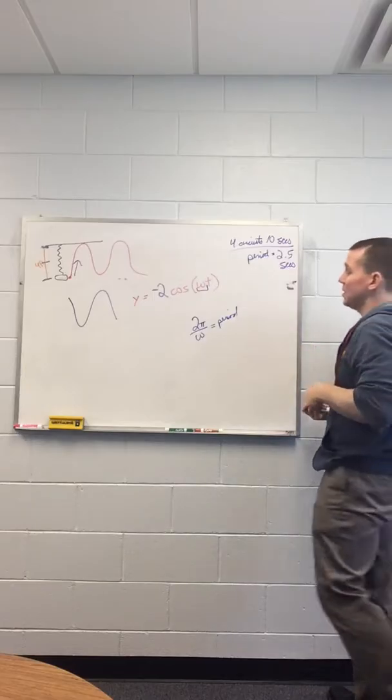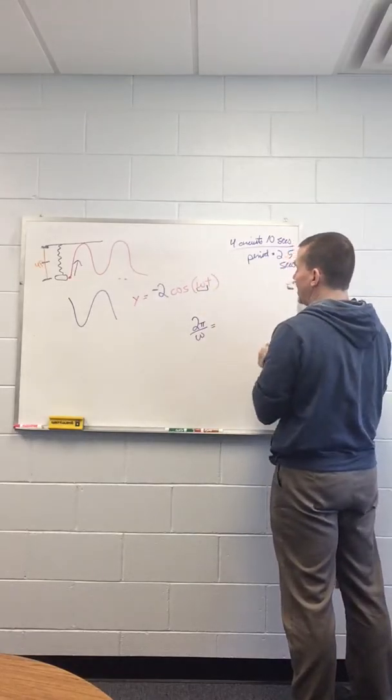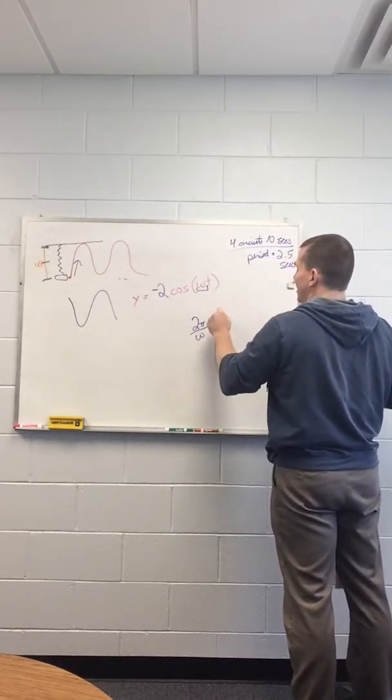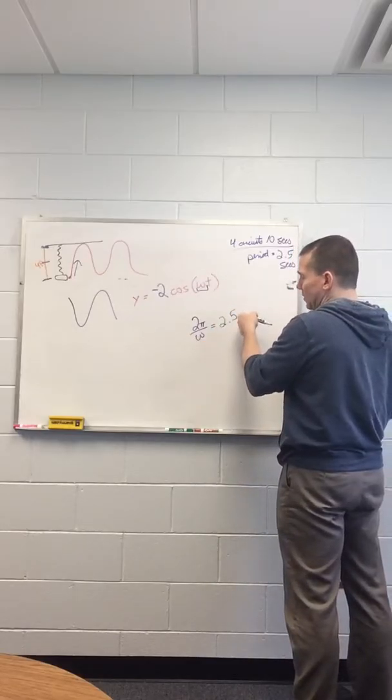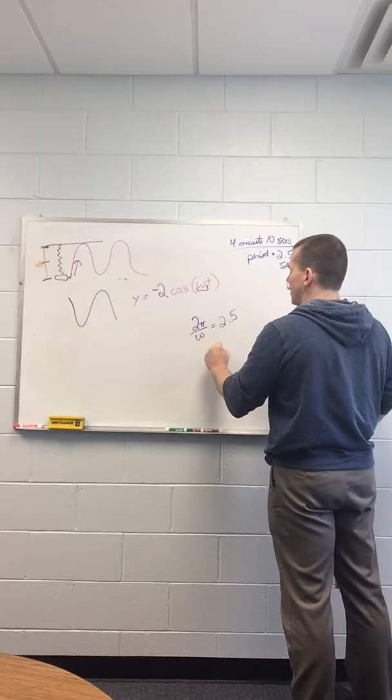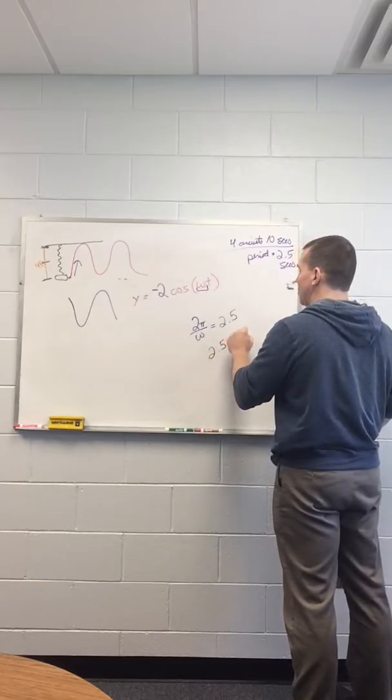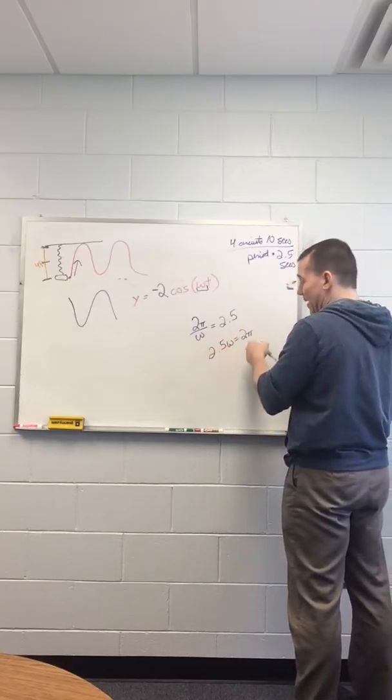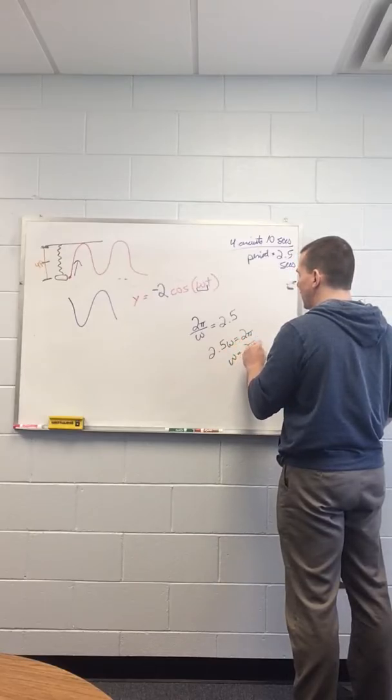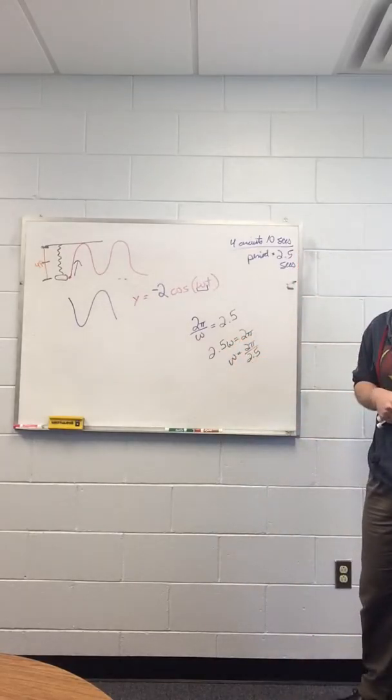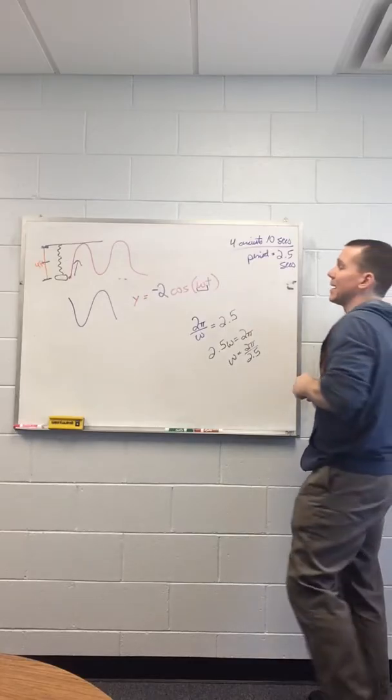Now just plug that into this equation and solve. So I get 2 pi over omega equals 2.5. Solve for omega, so multiply the omega over. 2.5 omega equals 2 pi. Divide the 2.5. Omega equals 2 pi over 2.5. And there we go.